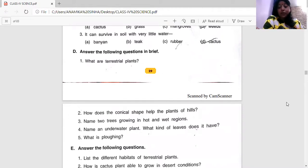Next, how does the conical shape help the plants in the hills? There are trees in the hills, in the hilly area. They are all conical shapes. Why is this? How does it help? The plants in the hills are conical in shape because it doesn't allow the snow to get deposited around them.